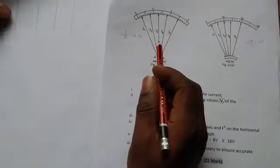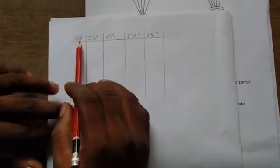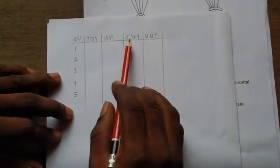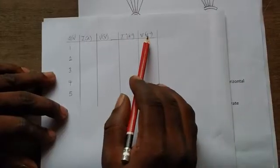This is the first value. I've created a table here. As you can see the table. The serial number here, current, voltage, reciprocal of current, and that of reciprocal of voltage. Now, let's go ahead to take the rating.